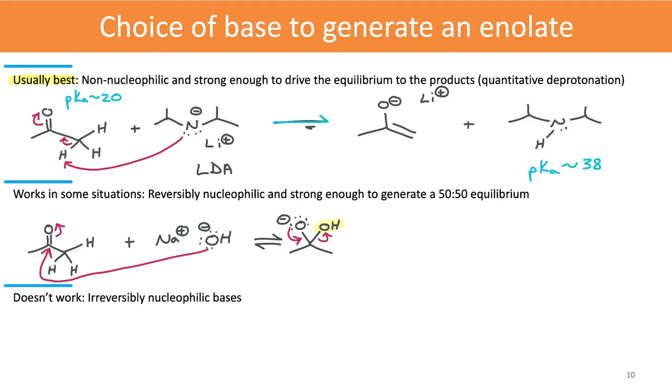But the other reaction that will be happening is that deprotonation step. Now if we look again at the differences in pKa values, we have a pKa of the starting alpha protons again at about 20, pKa of water of around 16. And so now notice that the equilibrium, well there's an equilibrium set up, it actually favors the starting materials in this case.